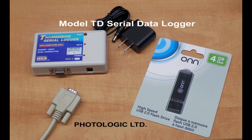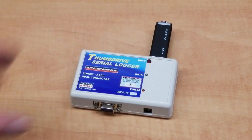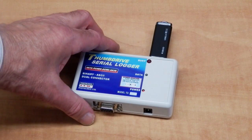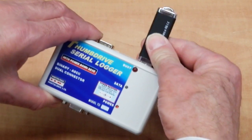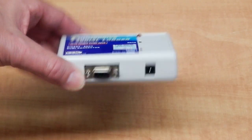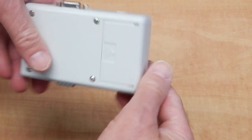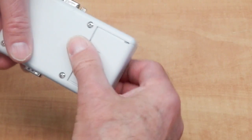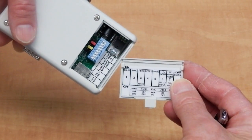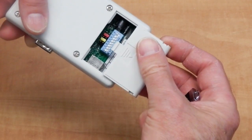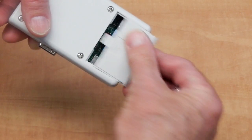Model TD serial data logger. This data logger has two input connectors, male and female. It also has a settings hatch to make your settings via dip switches and jumpers, rather than using any software.